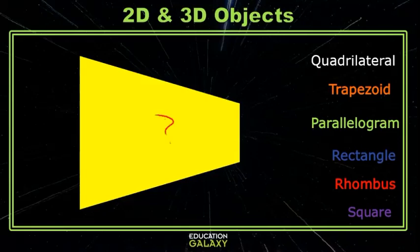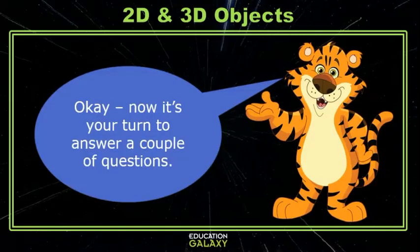Look at this shape. It has one pair of parallel sides, but the other pair would eventually intersect, so it is a trapezoid, and since it has four sides, it is also a quadrilateral. Now it's your turn to answer a couple of questions.